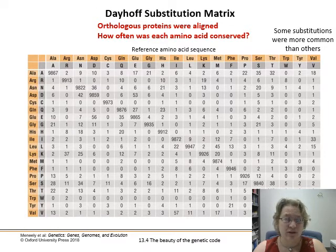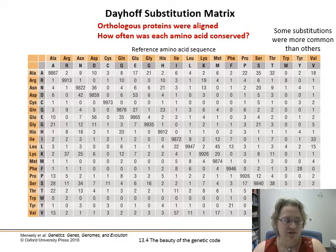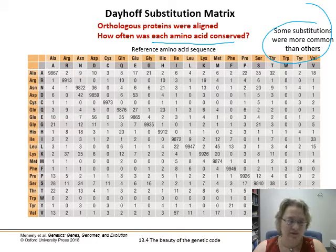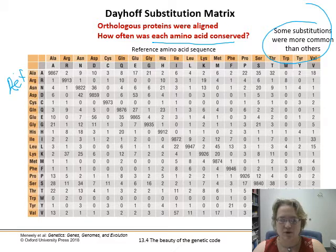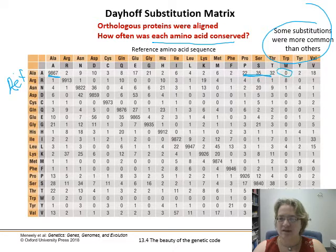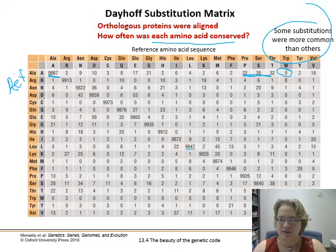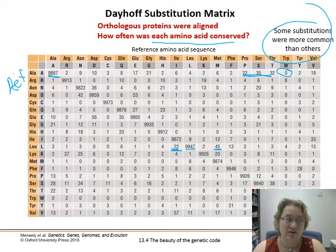This is where we get what we call a substitution matrix. This is the original one by Margaret Dayhoff, who looked at a whole bunch of proteins and saw where substitutions occurred between different organisms — how often each amino acid was conserved and what its most likely replacement was. Most of the time an alanine was kept as an alanine, but some changes happened more frequently and some would never occur. A leucine is more likely to swap to a similarly typed amino acid like isoleucine or methionine than to swap to an entirely different type of amino acid residue.